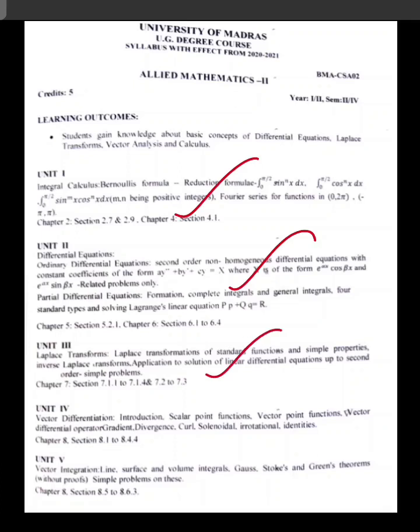Unit 4 is vector differentiation. We will use vector differentiation. The formula is: Del equals i-vector (∂/∂x) plus j-vector (∂/∂y) plus k-vector (∂/∂z). We will apply del to phi (∇φ).